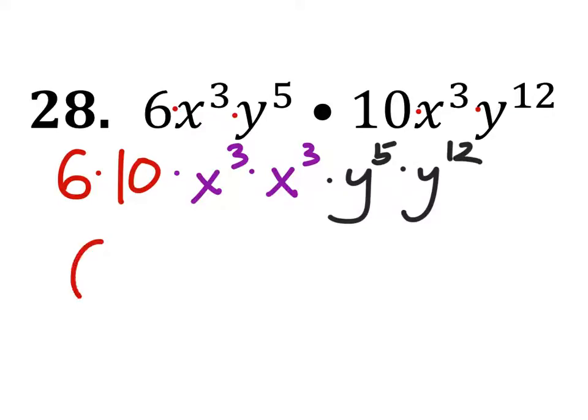So 6 times 10 is 60. This would be x to the power of 3 plus 3, which is x to the power of 6. And y to the power of 5 plus 12 is 17.